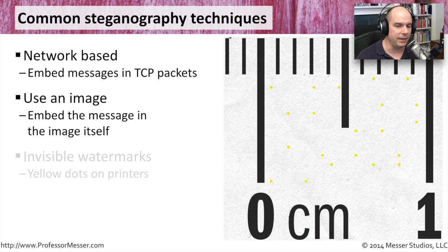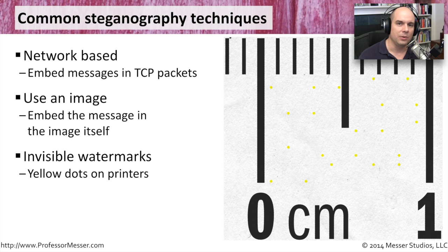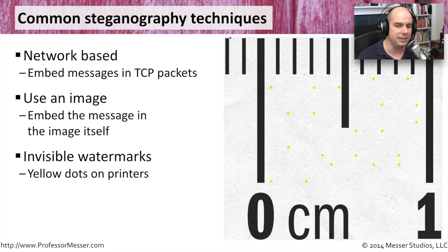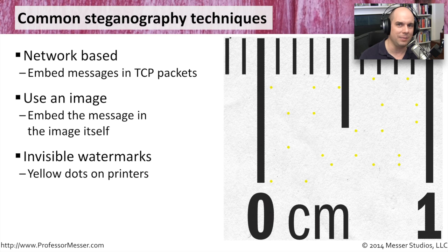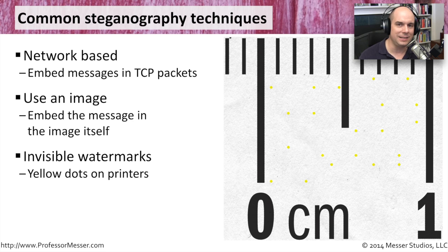Here's another method: if you have a printer — especially an inkjet printer — you may have noticed, if you look very closely, there are yellow dots in a corner of the printed page. This applies to laser printers, inkjet printers, and many printers today. Those dots together show the serial number, the make and model, and other information about the printer you're using. So if somebody finds a document and wants to know what printer created it, they'll be able to see the exact serial number of your printer — because it is steganography putting those tiny dots there, allowing us to track it back to your physical printer.